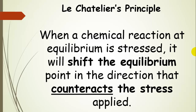Here's a formal statement of Le Chatelier's Principle: when a chemical reaction at equilibrium is stressed, it will shift the equilibrium point in the direction that counteracts the stress applied. In other words, it's going to try to undo whatever we did to it — to get rid of that stress and go in the opposite direction to counteract the reaction.